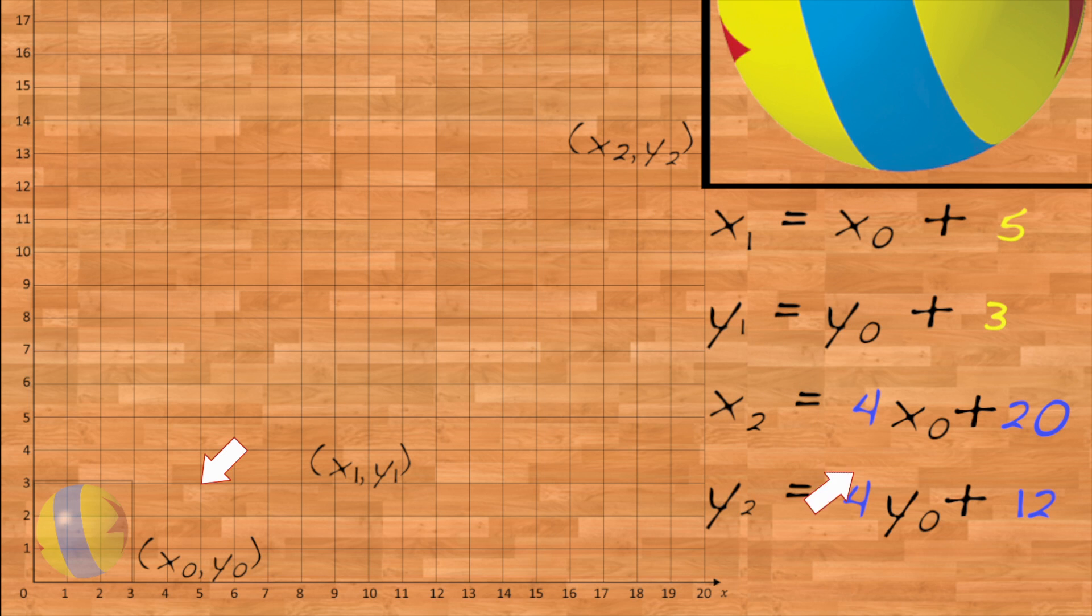This factor in front of x and y is 4, so the effective scale factor is still 4. However, the effective translation amount is 20 in x and 12 in y.